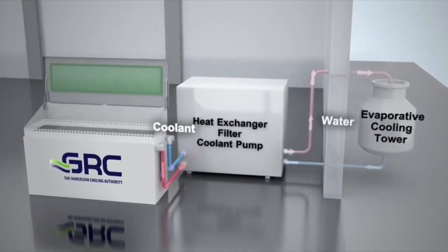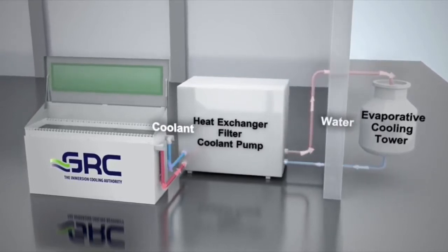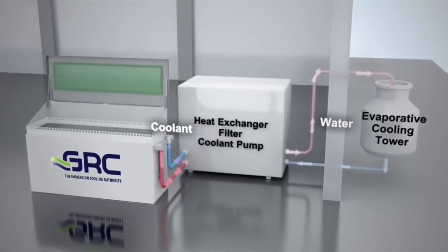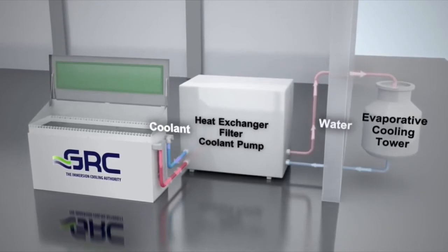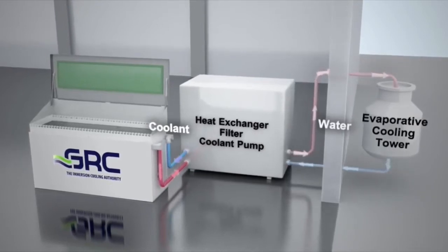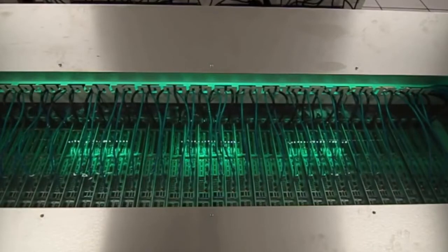In a normal data center operation, this means for every dollar spent on energy, only 3 cents is needed for cooling. Air-cooled operations have a PUE around 1.25, or 25 cents, a significant difference.